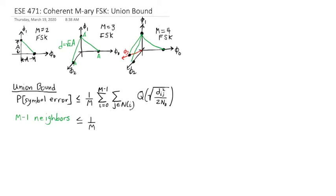We're going to have the same exact Q function. So we're going to multiply by capital M different symbols. And we're going to multiply by the neighbors of each symbol, which is M minus one neighbors. And the Q function with the distance being the square root of two, that quantity squared. So I'm going to have two A squared divided by two N naught.